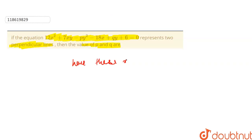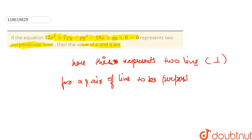This represents two lines. What if they are perpendicular? If there are two perpendicular lines, we know for a pair of lines to be perpendicular, what is the condition? a plus b is equal to 0.